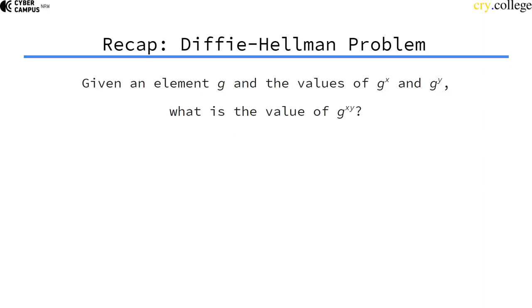If you remember, the Diffie-Hellman problem was the following: you have an element g, which is a generator, and an attacker only sees g to the power of x and g to the power of y. Can this attacker compute g to the power of xy?